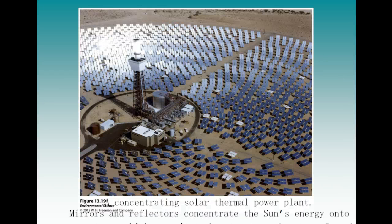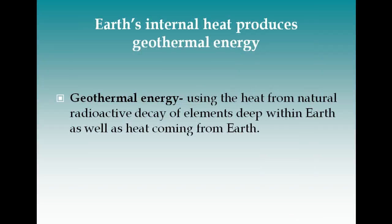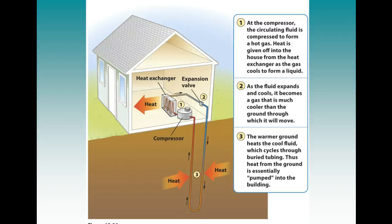A giant solar array — a large concentration of solar cells — is able to heat water to make steam. That steam turns the turbines, which turns the generator, which generates electricity. Geothermal energy comes from inside the earth. From convection cells and radioactive decay, radioactive parent isotopes decay into their daughter isotopes, releasing heat. That heat from inside the earth heats up groundwater, which produces steam to turn the turbine, to turn the generator, to generate electricity.